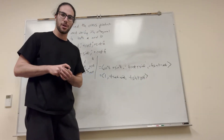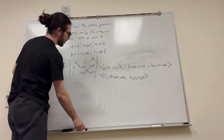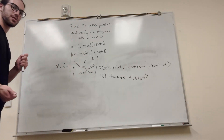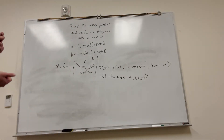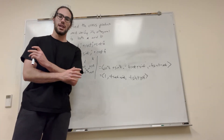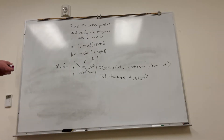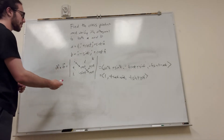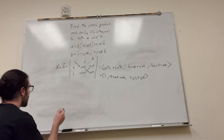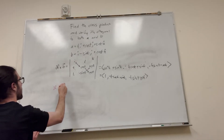Now we're going to prove that A cross B is orthogonal to A and B. We can't use cross products to prove this — what we use is dot products. What we know about dot products is that if two lines are orthogonal, the dot product is going to be equal to zero. So theoretically, A cross B should be orthogonal to A. So if you do A dotted with A cross B, we're going to get it.